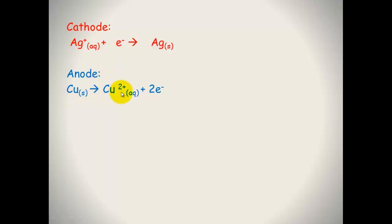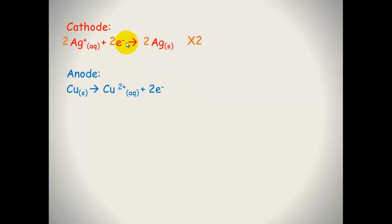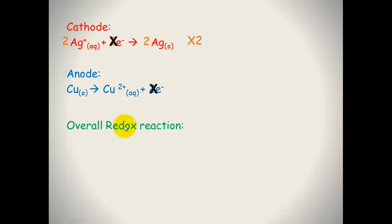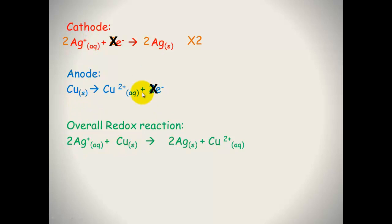The anode reaction is copper solid forming Cu²⁺ ions plus two electrons. Now we need to make sure the electrons are balanced for both equations. We multiply the silver equation by two to get two electrons. They now cancel out, so we write the overall redox reaction by adding the two equations together: two Ag⁺ plus copper solid → Cu²⁺ plus two silver solid.